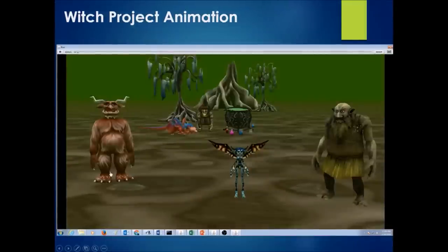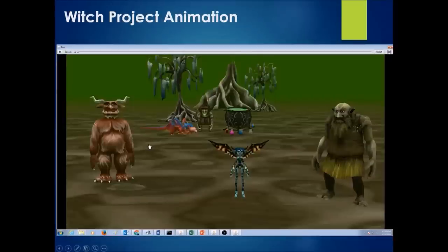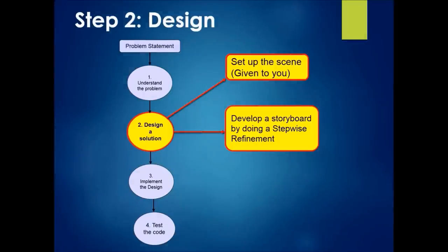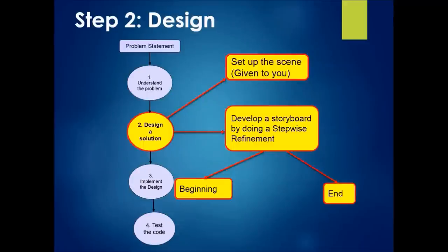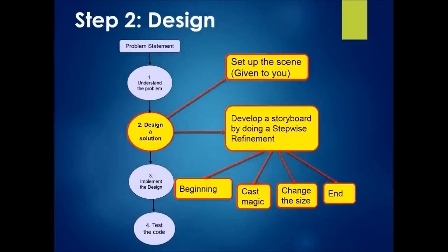The next repeating action is each of the objects resizing — the ogre becomes small, pixie is larger, and troll is smaller. So after the casting spell is done, they are changing in size. We'll call cast spell three times and change thumb three times for three objects. Our story has a beginning where the witch holds her magic wand, then she casts magic three times for three different objects, each object changes size, and then there is an end where the witch goes to her dragon and flies off.